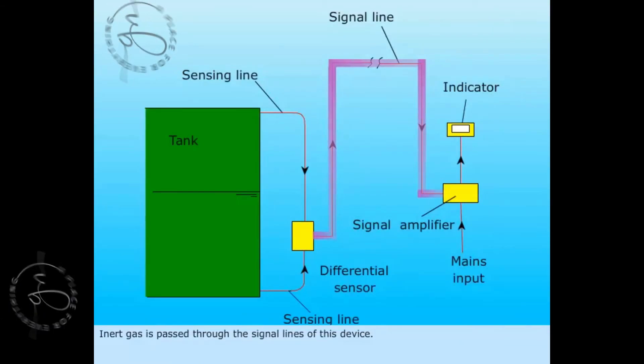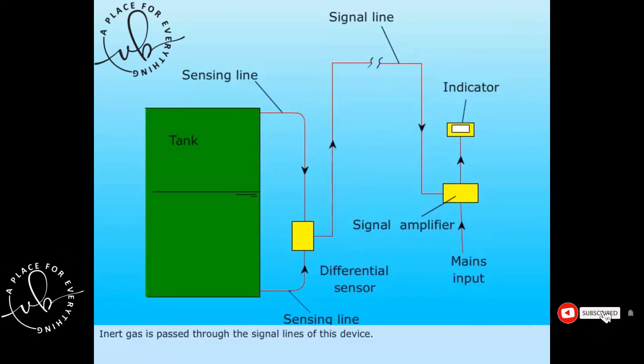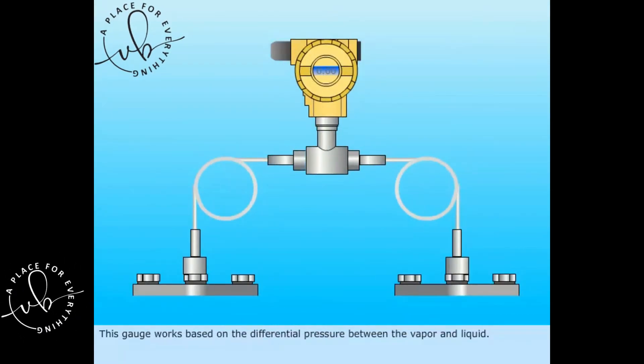Inert gas is passed through the signal lines of this device. This gauge works based on the differential pressure between the vapor and liquid.